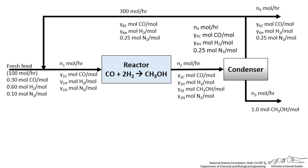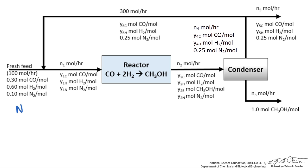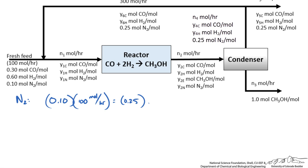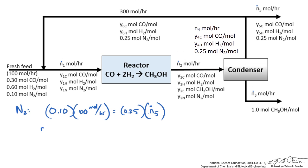An inert can help us. Nitrogen enters in one location and exits in one location, so using an overall balance on nitrogen we can calculate the purge stream flow rate. What comes in — 10 mole percent times 100 moles per hour — must equal what leaves: 0.25 times N5. Assuming steady state with no accumulation and nitrogen not participating in the reaction, we solve for N5 and get 40 moles per hour.